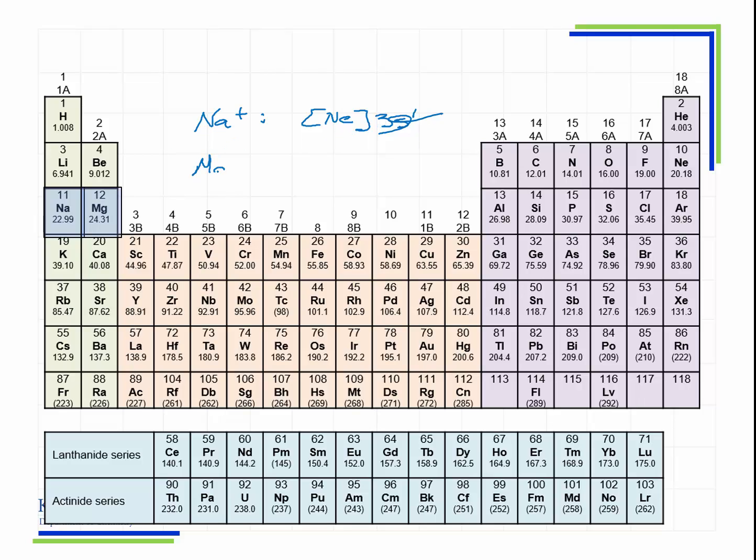When we're talking about magnesium 2 plus, we're talking about magnesium, which is neon 3s2. But when we remove those two electrons, we just have neon. So those are the isoelectronic cations.